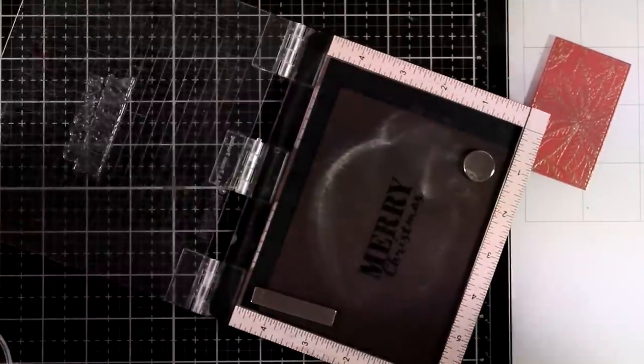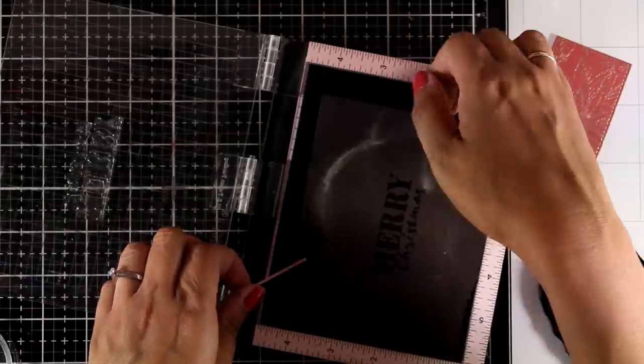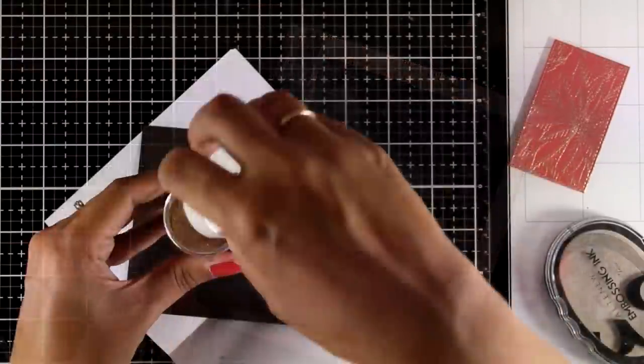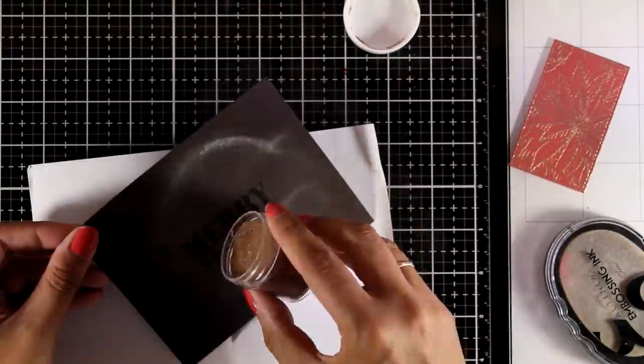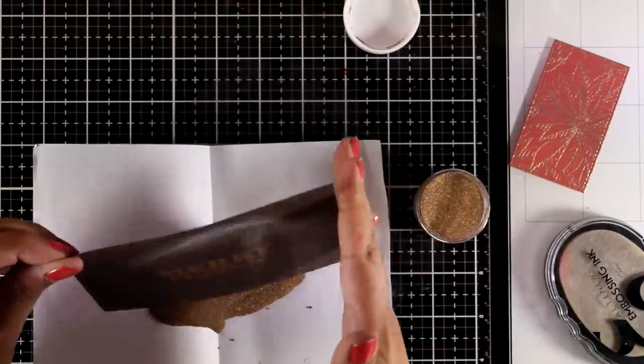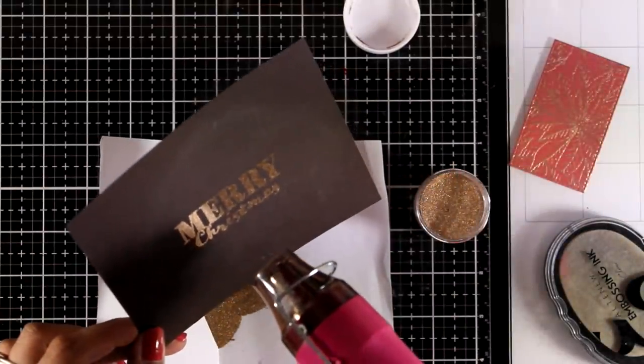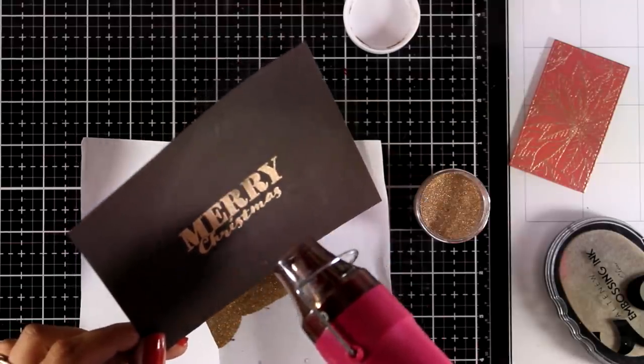I'm using embossing ink to stamp my sentiment. Just make sure that you stamp something that fits inside that window and then I'm going to apply the same embossing powder so everything comes together. Again, I'm using my heat gun to melt the embossing powder.